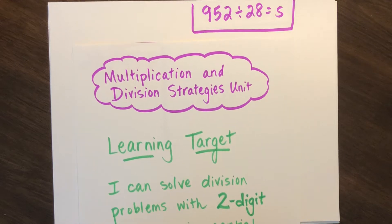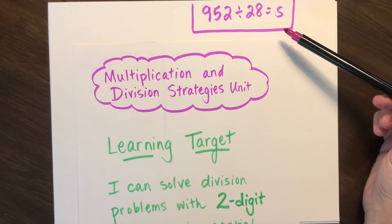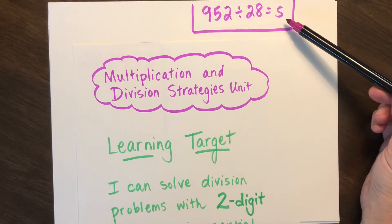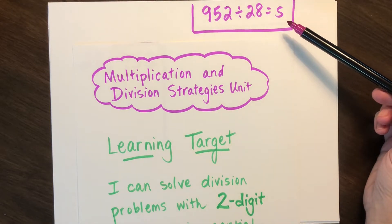Here is our first problem. Look in the right top corner: 952 divided by 28 equals s. Of course s is our variable representing the unknown quotient. Take a minute to set up this division problem as you would to solve using the partial quotients method. Pause the video if you need more time.